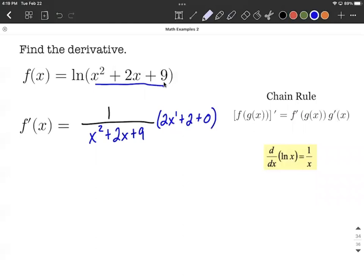The 9 gets a derivative of 0 because it's a constant. We can clean this up to get our final answer. I'll think of this as over 1 so I can put it in the numerator and multiply numerators together to get 2x plus 2.